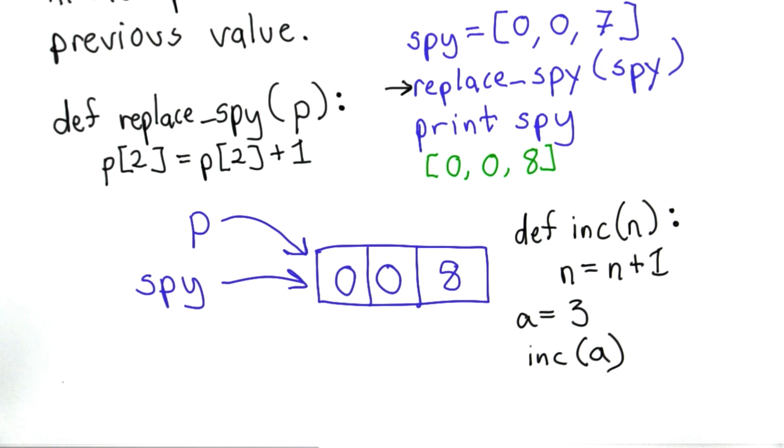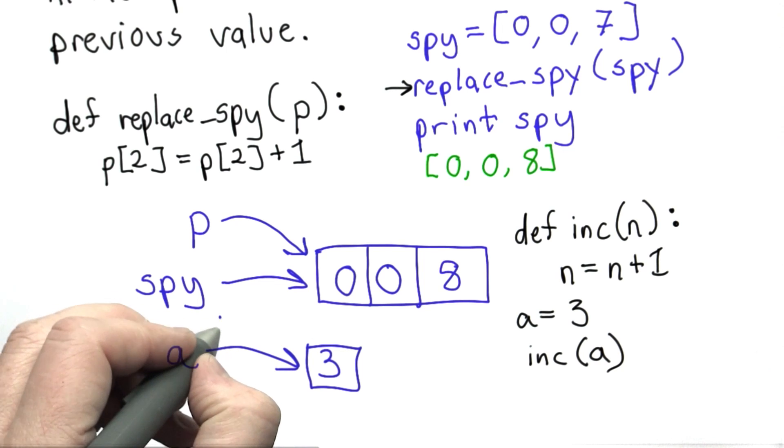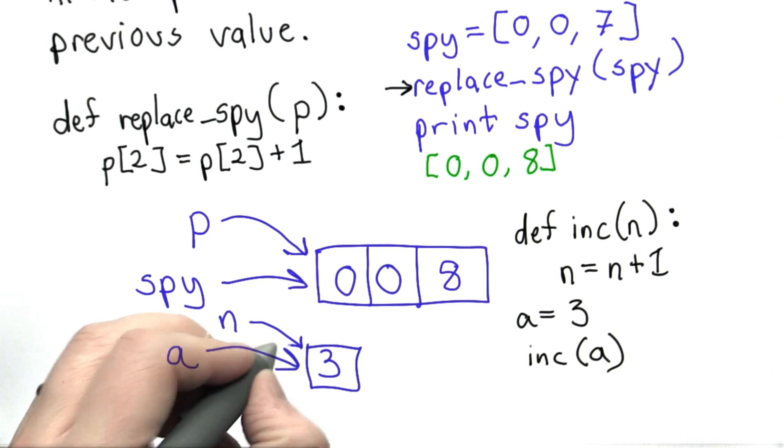So what happens here? Well, the variable a, that name refers to the value 3. When we pass that to inc, the same thing happens as happened when we passed the mutable list as parameter p to replaceSpy. The name n now refers to the same value as a referred to.